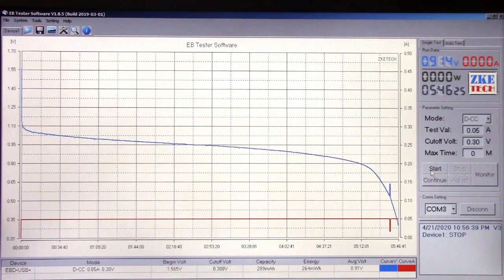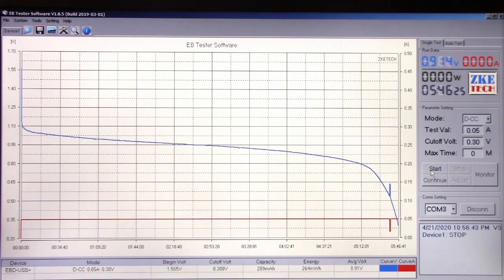Discharge is finished and as you can see, it ran for 5 hours 46 minutes and change. Energy output 264 milliwatt hours and 289 milliamp hours.